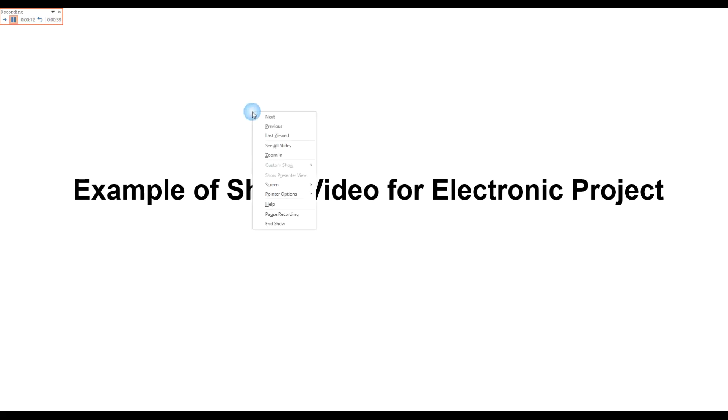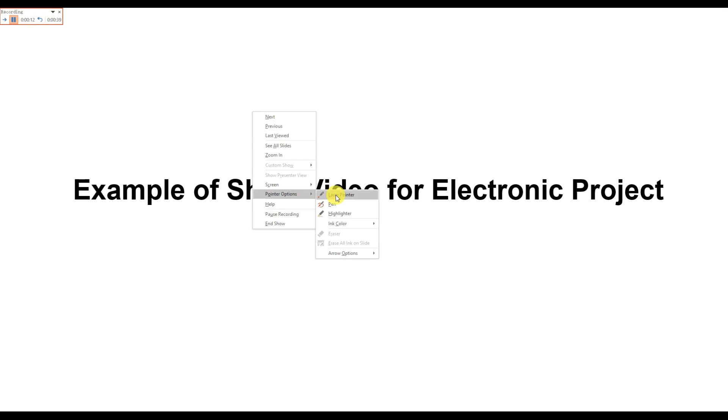So if we want to use the laser pointer, we can just right-click and the counting will stop. Then we can use the laser pointer to point to areas to record our slide.